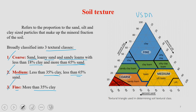This is the USDA textural classification triangle. From this triangle, one can easily identify which particular textural class a given soil falls into. You can analyze a soil sample and find out the proportion of coarse, medium, and fine grains, then plot it on the triangle. For example, if you have a soil with about 20 percent clay, 50 percent silt, and 30 percent sand, you trace the 20 percent clay line, the 30 percent sand line, and the 50 percent silt line — the intersection point is where your soil sample falls.